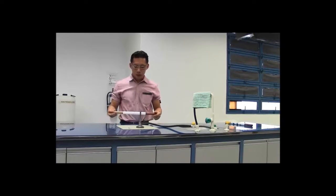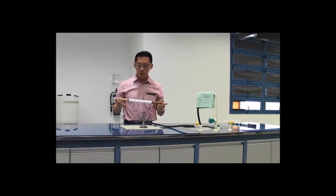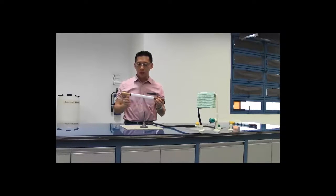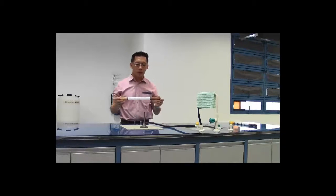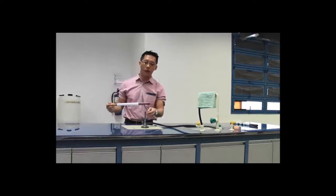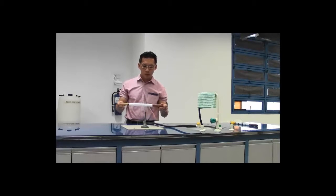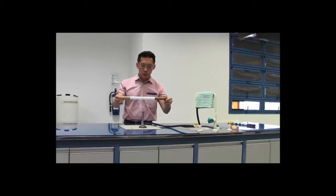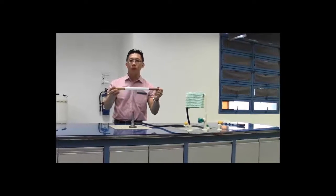The first one, I have here a rod which is made up of wood on one half and copper on the other half. And over here, I have a Bunsen burner. And there's a flame which I'm going to heat up the two sections.